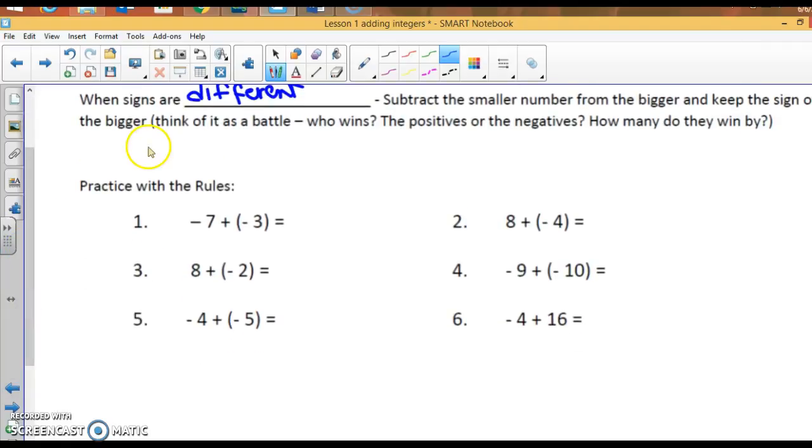So, let's do some practice. Negative 7 plus negative 3. Signs are the same, so you add and keep the sign: negative 10. 8 plus negative 4. The signs are different, so you subtract. 8 minus 4 is 4. And take the sign of the larger. It'll be positive 4.